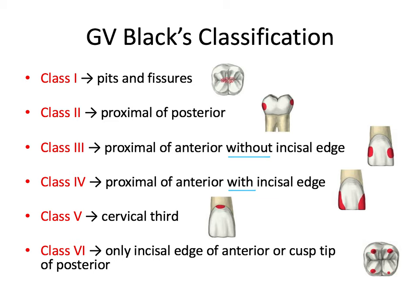Class 5 decay refers to caries in the cervical third of the facial or lingual surface of any tooth, right along the gum line. This is a common place to get caries for people with exposed root surfaces, xerostomia, or in adolescents or young adults with particularly poor oral hygiene.